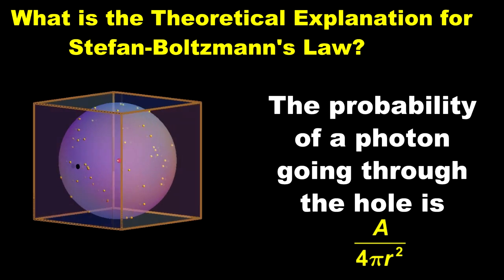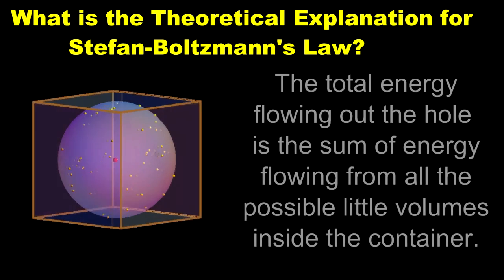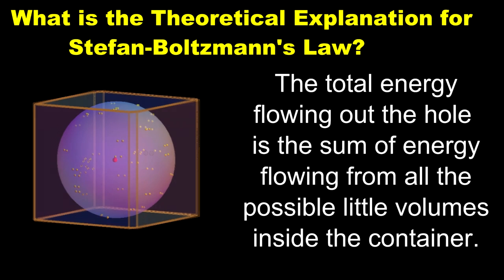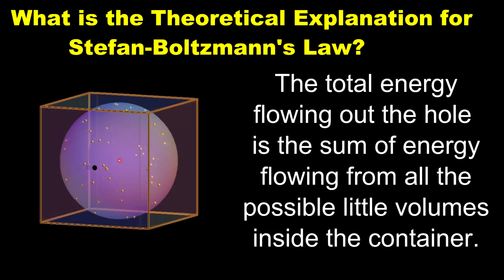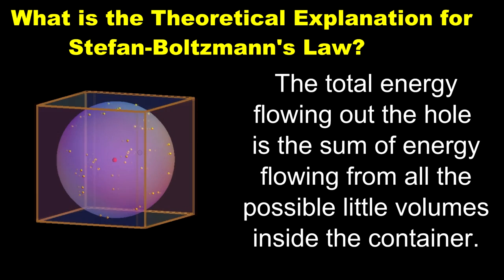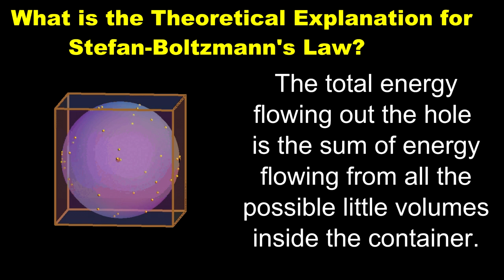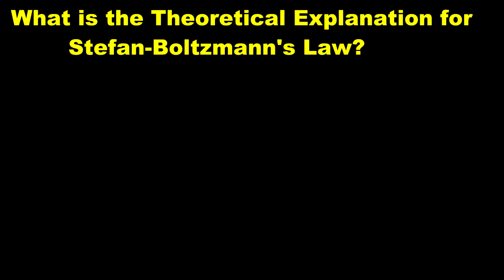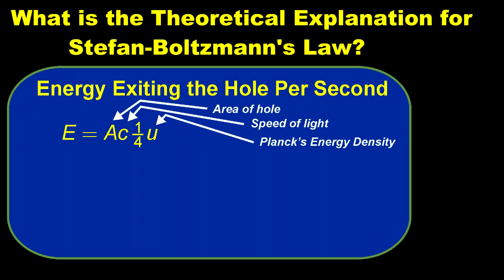That's the physics of the situation. To get the total energy flowing out of a real hole in the container, you have to sum all the contributions from all the little volumes inside the container. It's a good math problem, but too tedious for a video, so I'm just going to skip to the answer. After all the integrals are done, you get that the energy flowing out is equal to the area of the hole times the speed of light times one-fourth the energy density.